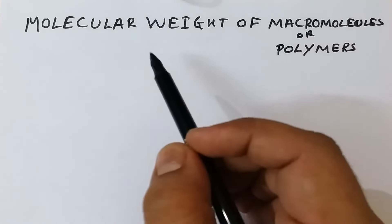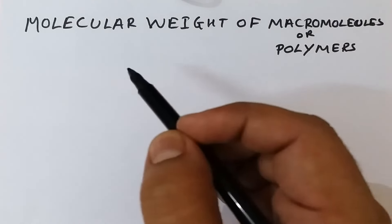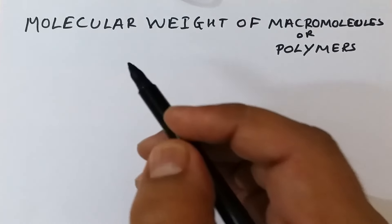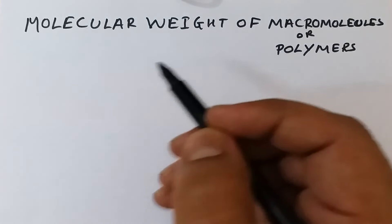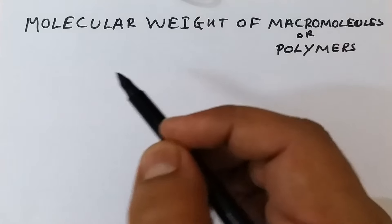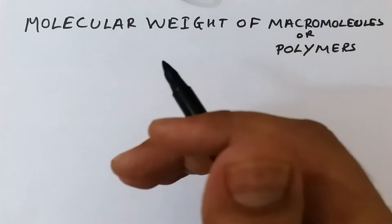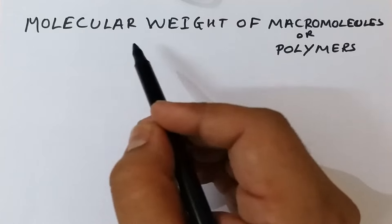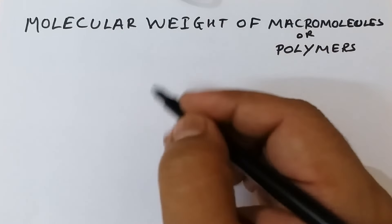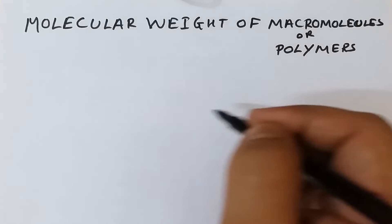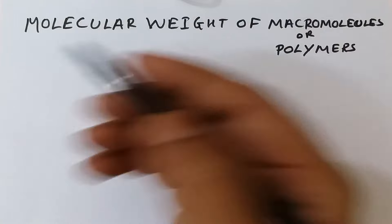Welcome. Today we are going to discuss molecular weights of macromolecules or polymers. Polymers are made up of a large number of small building blocks or monomers which combine together to form a large polymeric chain. During polymerization, there are a large number of chains propagating, so when we look at the molecular weight of the polymer we cannot take the absolute molecular weight but we need to take the average molecular weight of all the polymeric chains existing in the polymeric solution.